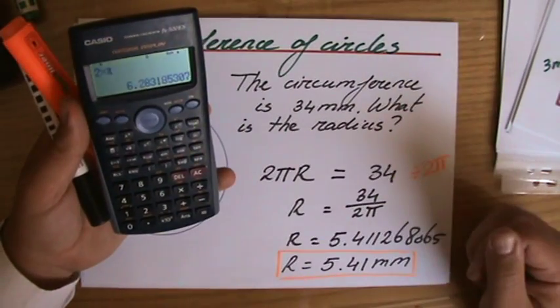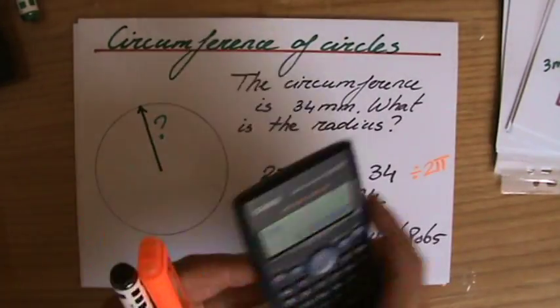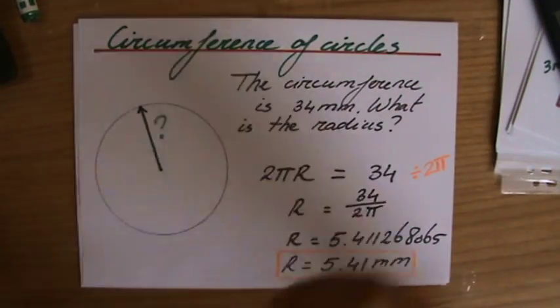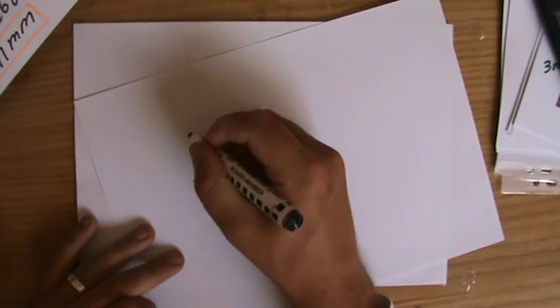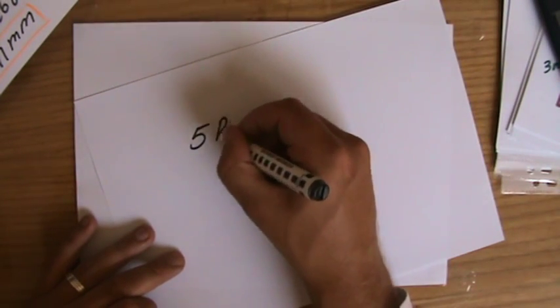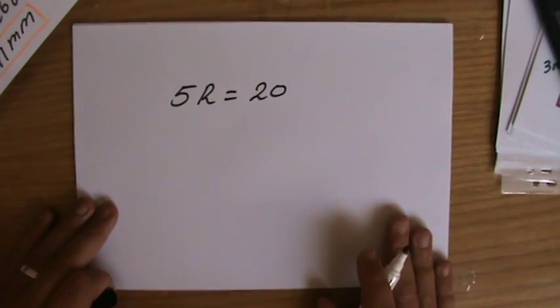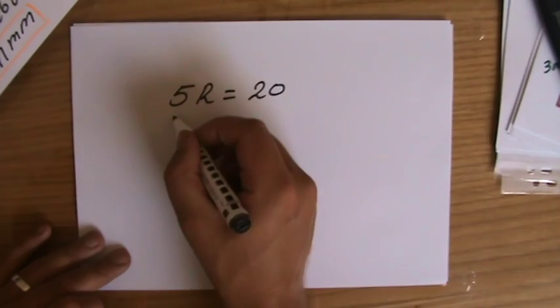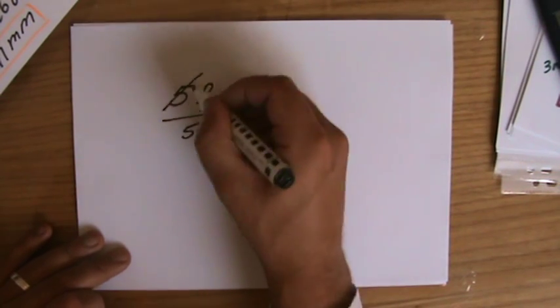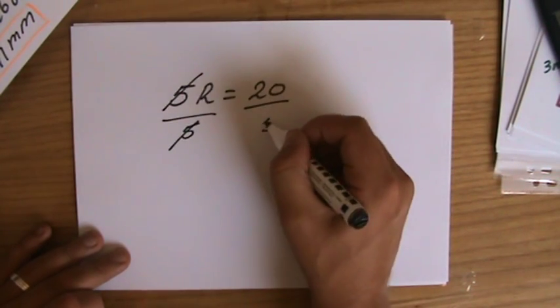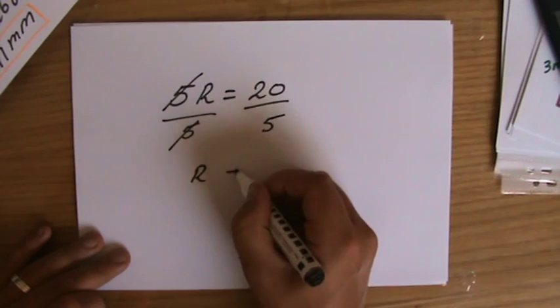You could write that down here: 2 times π is 6.283185 and a lot more. In a different situation, if I just can show you that, perhaps you have 5r equals 20. Now what is the value of r? What would you do to find out?